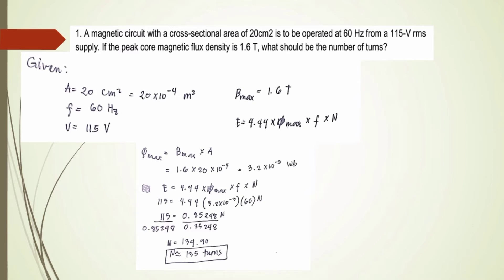so we will calculate it to meters squared. We have 20 times 10 raised to negative 4 meters squared and operated frequency is 60 Hz and then we have a supply voltage which is 115 volts and flux density which is 1.6.